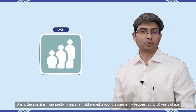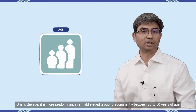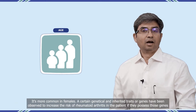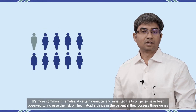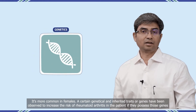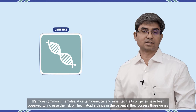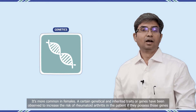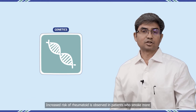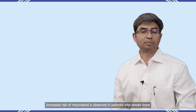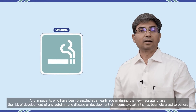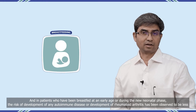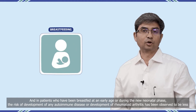One is the age — it is more predominant in a middle-aged group, predominantly between 20 to 50 years of age. It is more common in females. Certain genetic and inherited traits or genes have been observed to increase the risk. Increased risk of rheumatoid arthritis is observed in patients who smoke more, and in patients who have been breastfed at an early age or during the neonatal phase.